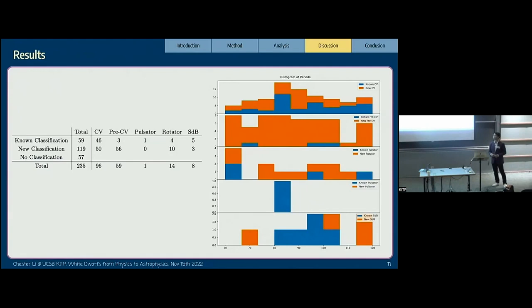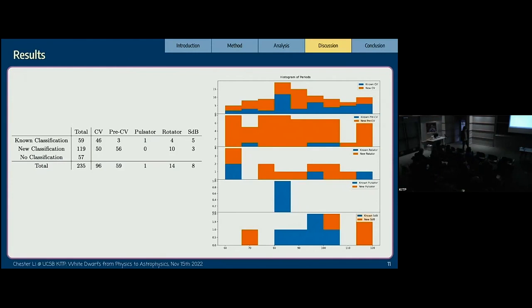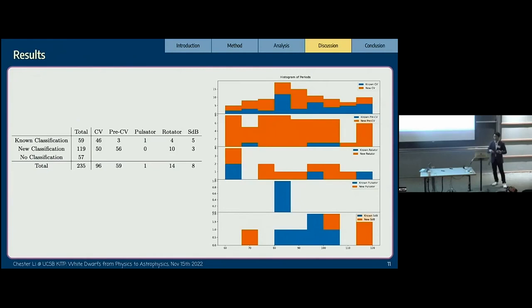Do you have objects in the sample where you know the period already from previous work to check how well your method works? Absolutely. The first step of this project was running the code on a sample of 2000 white dwarfs where we already know the period. We adjusted all our parameters in the code until everything matched up, and then we ran the code on this much larger sample.